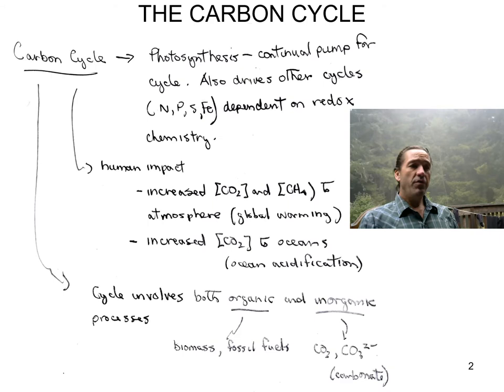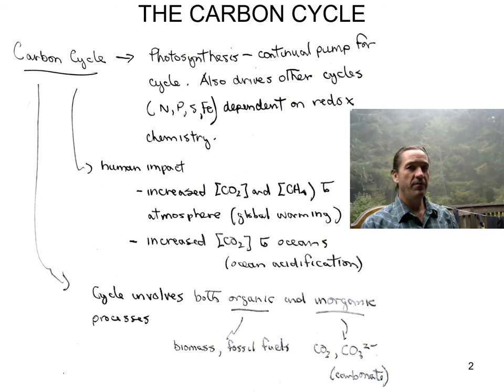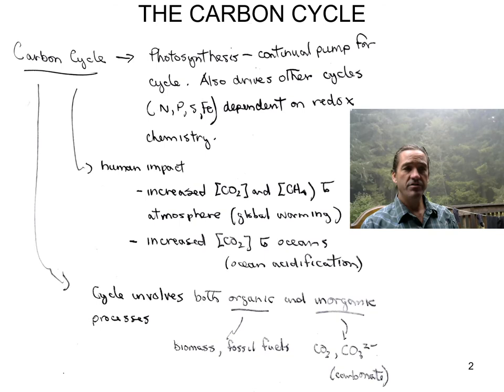With respect to the carbon cycle, we will look at human impact on this cycle. We are disturbing it — it is no longer in a steady state as it was for hundreds of thousands of years before the Industrial Revolution. Due to human activities, we've increased the CO2 concentration and the methane concentration in the atmosphere, which is leading to global warming.